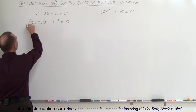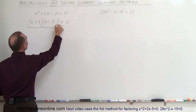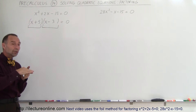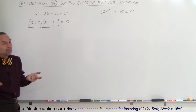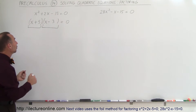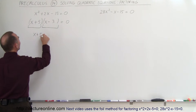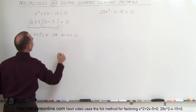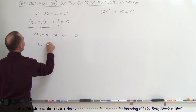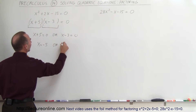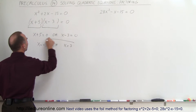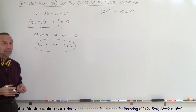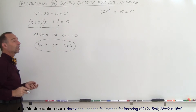You have two multiplications — you're multiplying this times this and you get 0. Whenever you multiply two things together and get 0, then either one or the other must be 0. That means either x plus 5 equals 0 or x minus 3 equals 0. So x equals minus 5 or x equals 3. Those are your two possible answers — the solution to that quadratic equation.